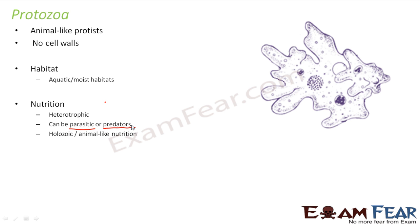Protozoa have animal-like nutrition, that is holozoic nutrition. Holozoic nutrition means the direct intake of solid food. For example, human beings also have holozoic nutrition because we take in solid food directly. That is one similarity with animals. Reproduction in protozoa occurs both asexually as well as sexually.